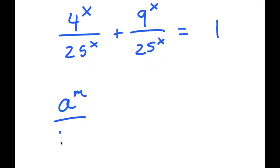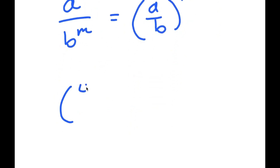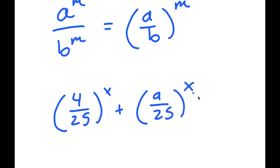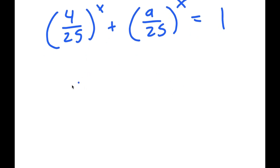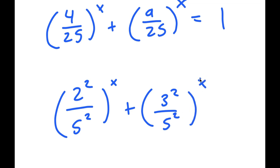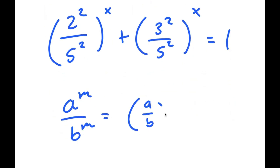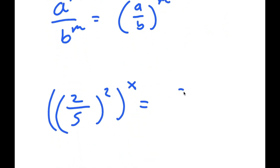Now if I have something in the form a to the power of m over b to the power of m, this is equal to a over b to the power of m. So 4 to the power of x over 25 to the power of x turns into 4 over 25 to the power of x, and 9 over 25 to the power of x. From here, I can rewrite 4 over 25 as 2 squared over 5 squared, and 9 over 25 as 3 squared over 5 squared. Applying the same rule, 2 squared over 5 squared turns into 2 over 5 squared, and 3 squared over 5 squared turns into 3 over 5 squared.